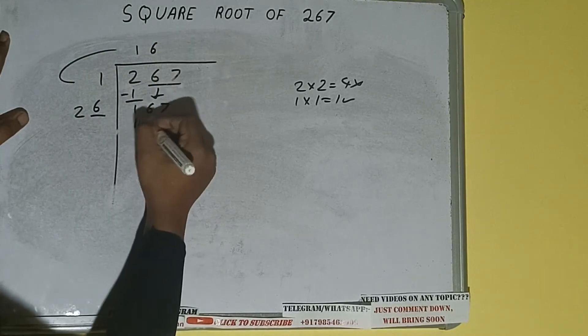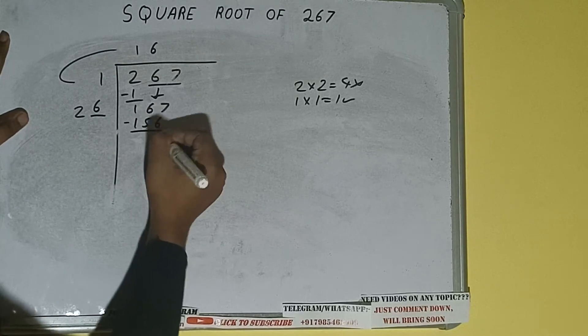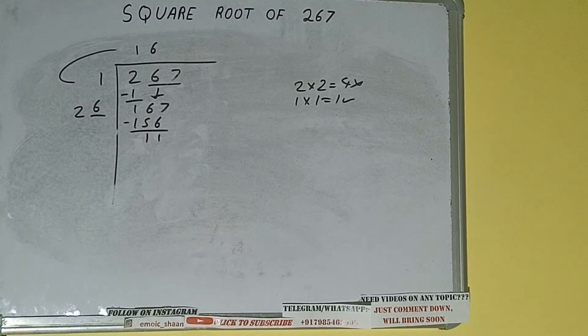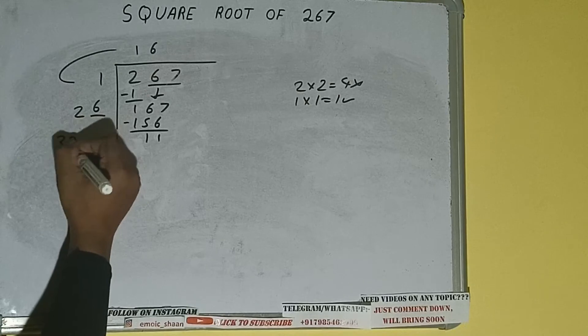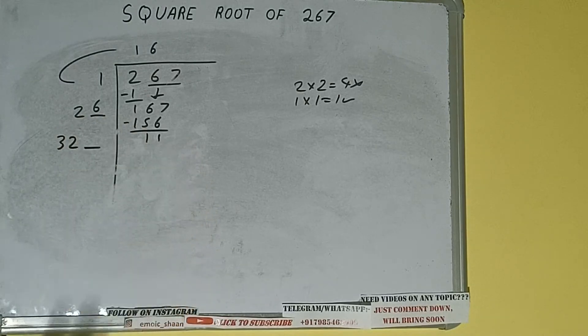Whatever number we write here we have to write here also. If we write six here and six here it will be 156, subtract, 11 will be left. Now 26 into 6 we did, so add both. 26 plus 6 will be 32.